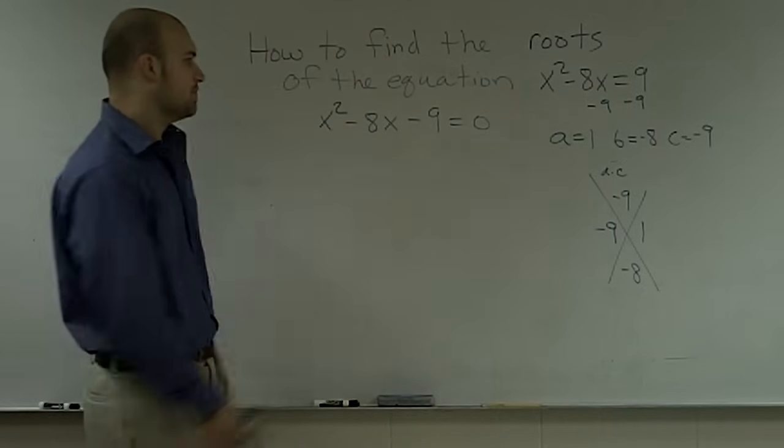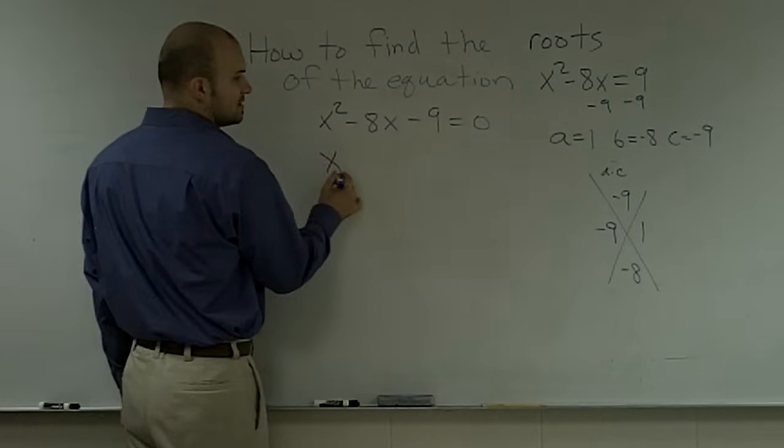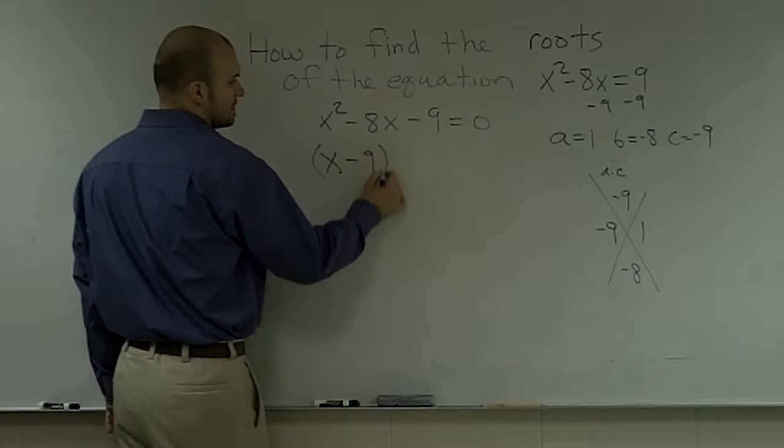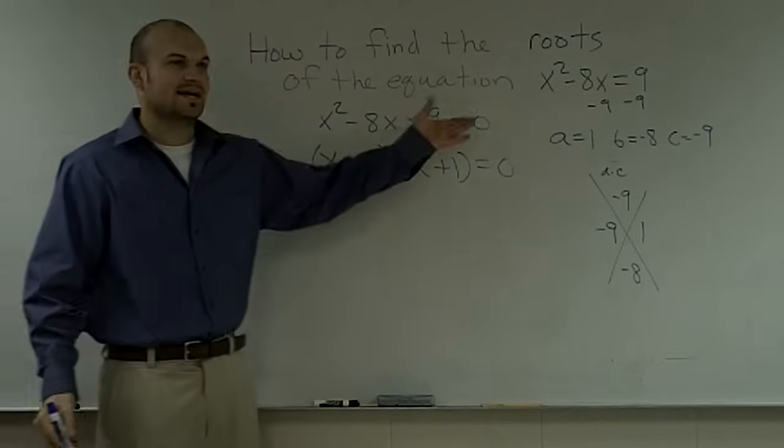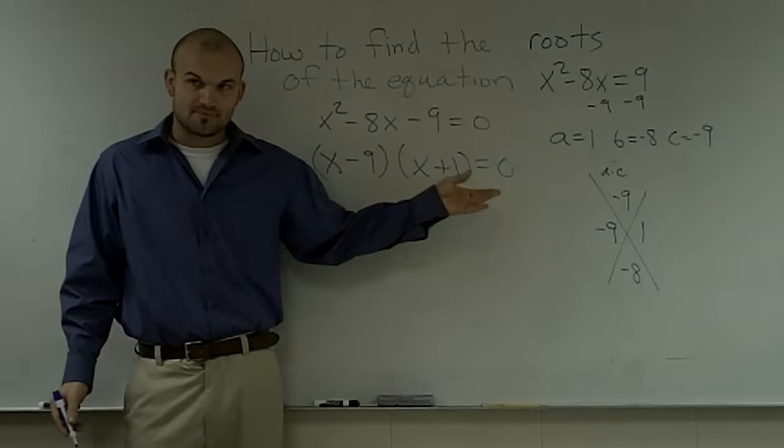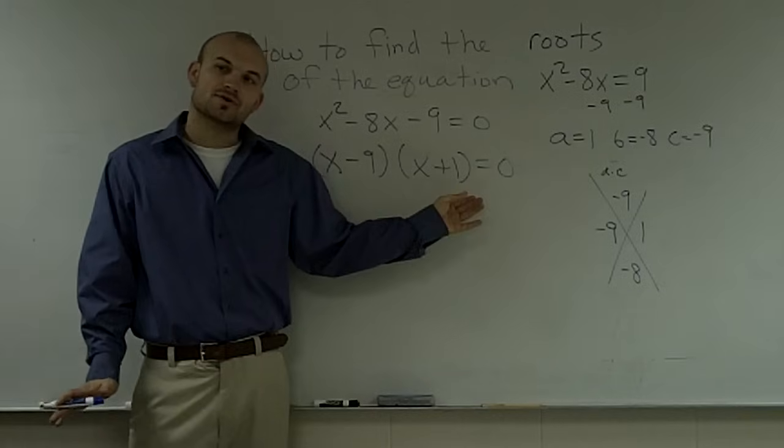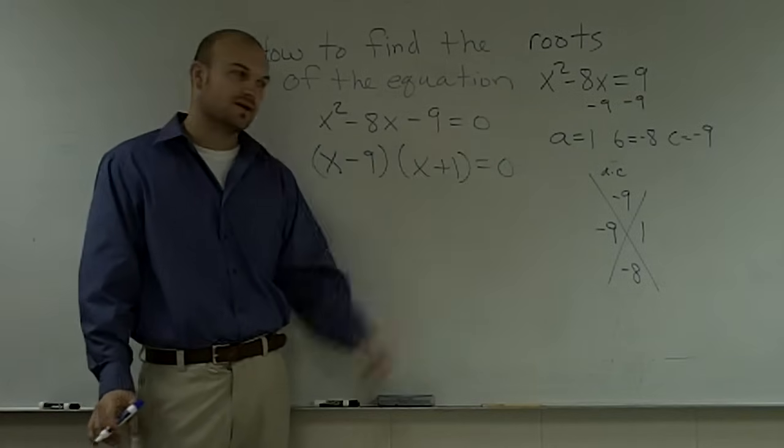Therefore, now you have a negative 9 and positive 1, so I just put them in my factors. So I have x minus 9 times x plus 1 equals 0. You cannot forget to have those equal 0. It's a very big mistake that a lot of students will make, is they will not continue that equal 0.